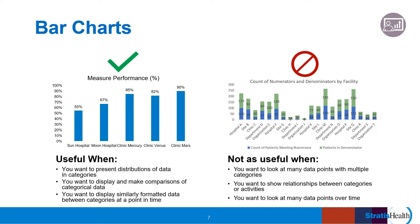This bar chart tells us very quickly that Clinic Mars has the highest performance for this measure at 90%, and Sun Hospital has the lowest performance at 55%. The bar chart on the right has many data points and lists the count of both the numerator and denominator for each measure rather than a percentage, making it difficult to interpret how each facility performs. Bar charts are not as useful when you want to look at many data points with multiple categories, show relationships between categories or activities, or look at many data points over time.